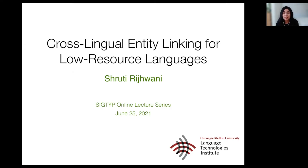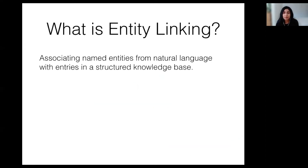So let's get started with looking at the entity linking task. As we all know, natural language text often contains words that represent named entities, like person names, organization names, or location names. Entity linking is the task of associating these named entities with their corresponding entries in a structured knowledge base, such as Wikipedia or Freebase.